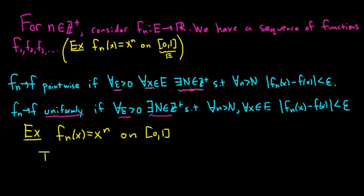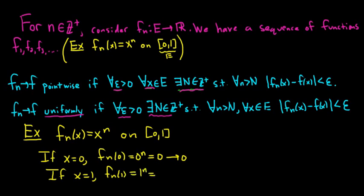So if x is 0, then we have f sub n of 0 equals 0 to the n, which is equal to 0. So it should converge to 0. If x is equal to 1, we have f sub n of 1, and that's equal to 1 to the n, which is 1, which converges to 1.